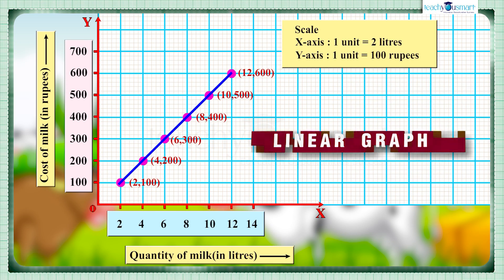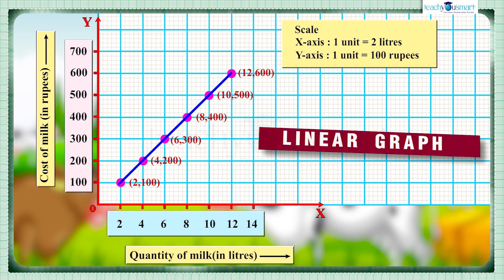Now when we extend this line forward and backward, we can see that the linear graph passes through the origin. Can you say what's the reason for that? Yes, in the given quantities, one is dependent and the other one is independent.